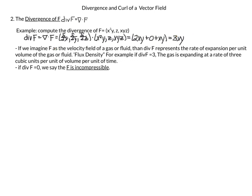If we imagine f as the velocity field of a gas or fluid, then div f represents the rate of expansion — how much the fluid is expanding or diverging — per unit volume of gas or fluid. This is also called flux density. For example, if div equals 3, the gas is expanding at a rate of 3 cubic units per unit of volume per unit of time. And if div equals 0, we say that f is incompressible.